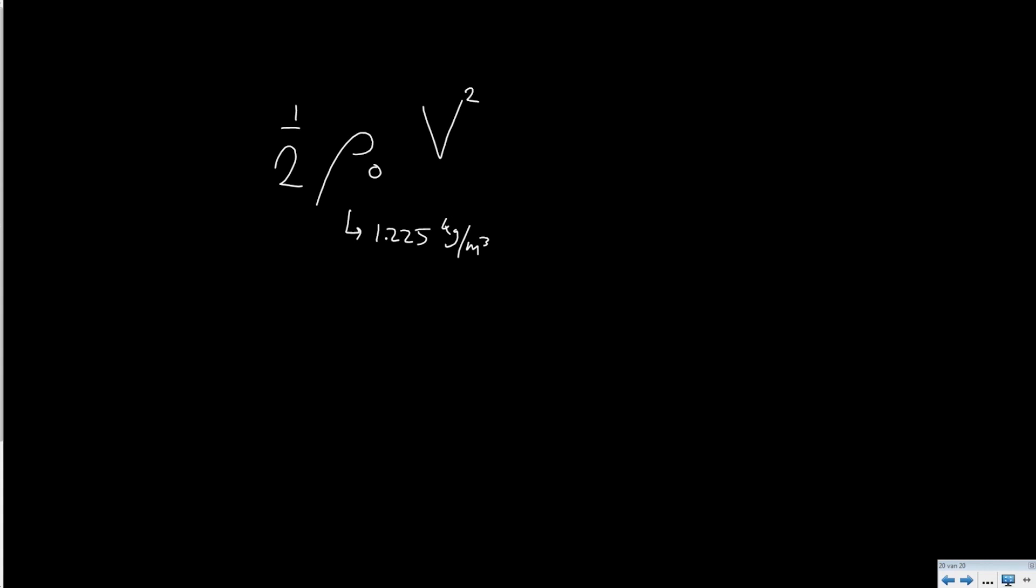We assume always that the density is equal to the density at sea level which is 1.225 kg per meter cubed. And this is the speed which we show and we call this the equivalent airspeed.